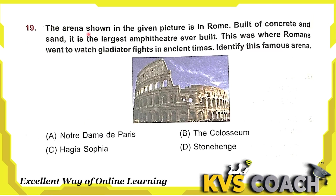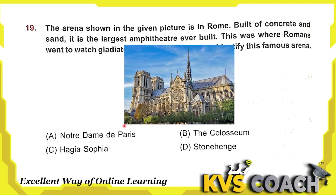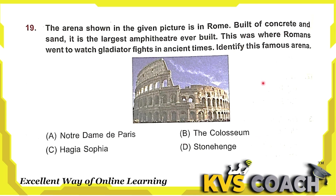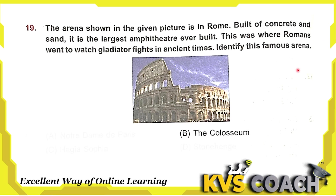Next question: the arena shown in the given picture is in Rome. Built of concrete and sand, it is the largest amphitheater ever built — this was where Romans went to watch gladiator fights in ancient times. Identify this famous arena. Option A is Notre Dame de Paris. Option B is the Colosseum. Option C is Hagia Sophia. Option D is Stonehenge. So the right answer is option B, the Colosseum.